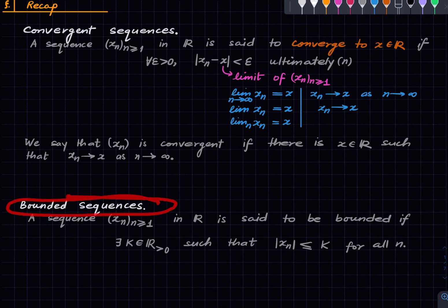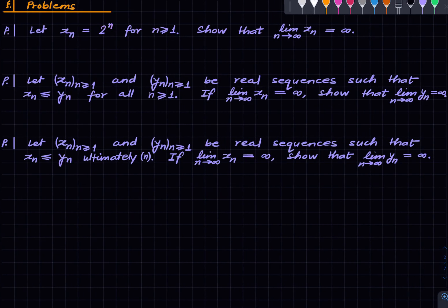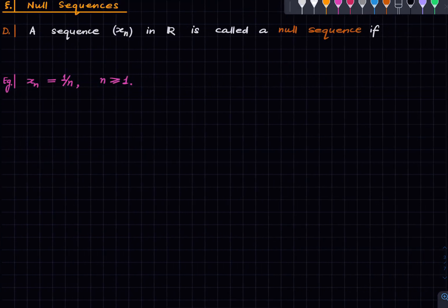Let's also recall the notion of a bounded sequence. A sequence xn in R is said to be bounded if there is a positive real K such that the absolute value of every element in the sequence is controlled by this positive real. That's a very simple definition. Here are some problems for practice, and now let us move on.